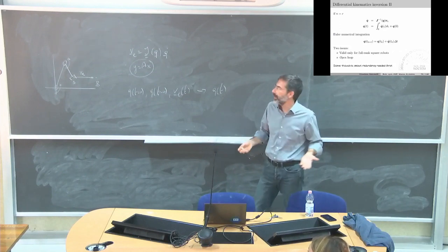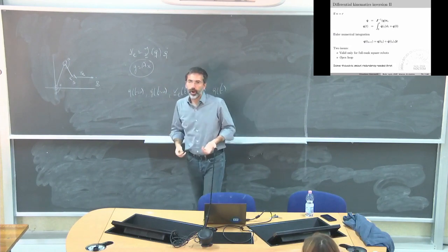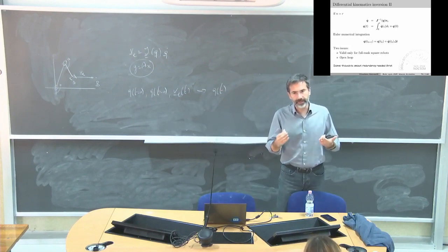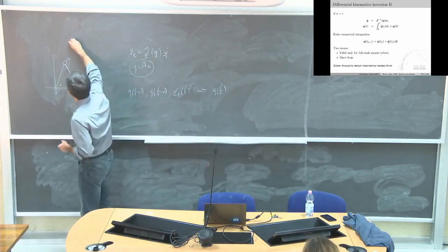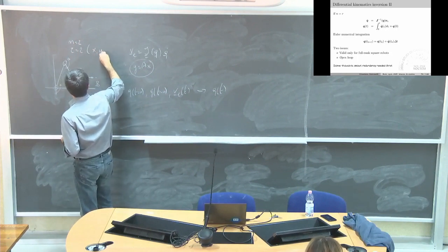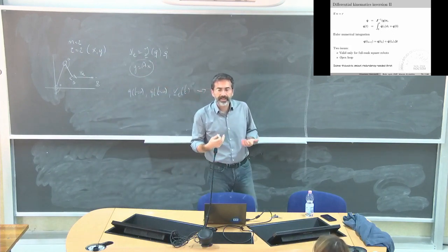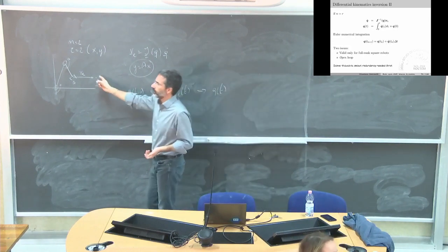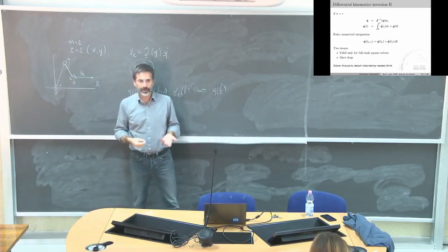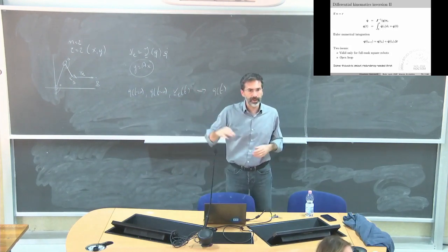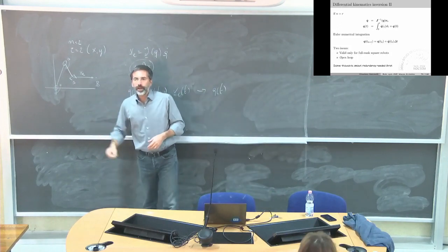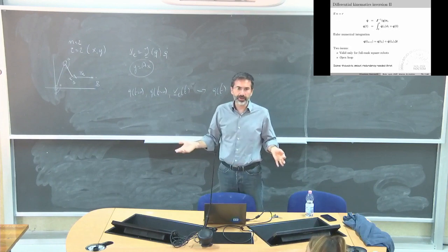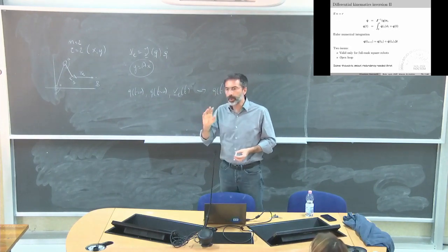If the problem is square — meaning the number of joints equals R, the number of task variables — for example N equals 2 and R equals 2, meaning I'm only interested in X and Y position of the end-effector — this is a square problem. I cannot also control the orientation because I have two motors and three degrees of freedom, so I just disregard orientation and only control position. With three links I can control X, Y, and Z; with six, position and orientation.